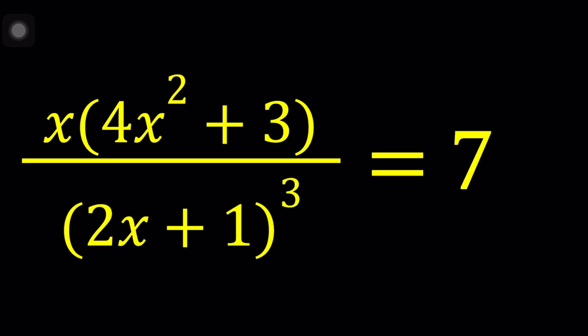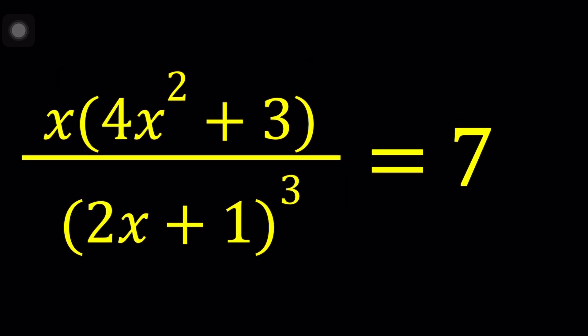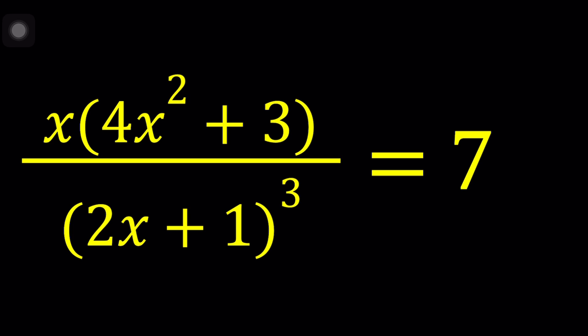I don't speak Russian but some people think I'm from Siberia because of the username but that's not the case. Anyways, it's a really nice book full of beautiful problems, a really good collection. So here's the problem we have: x(4x² + 3) divided by (2x + 1)³ equals 7.